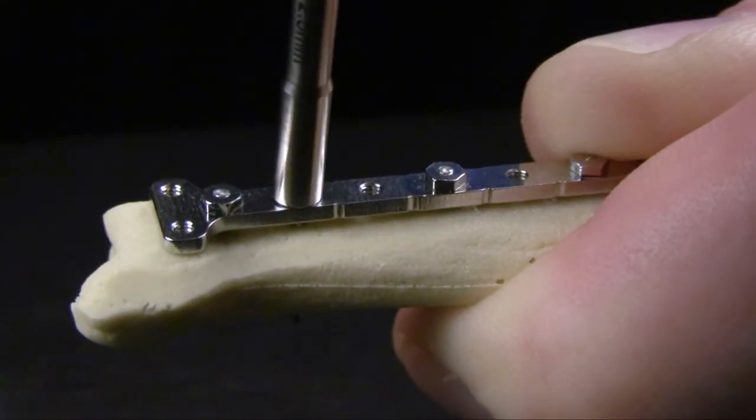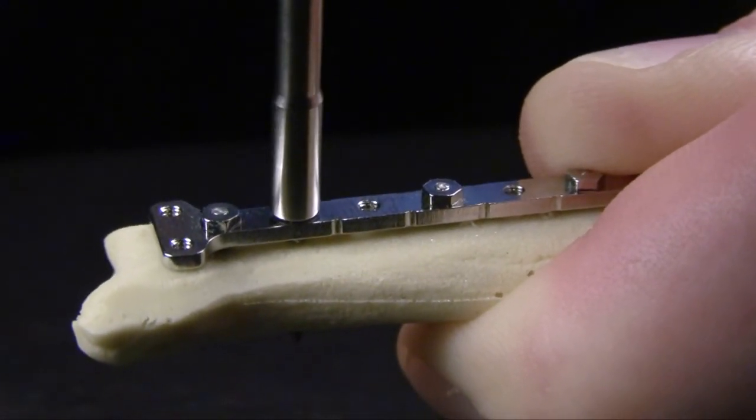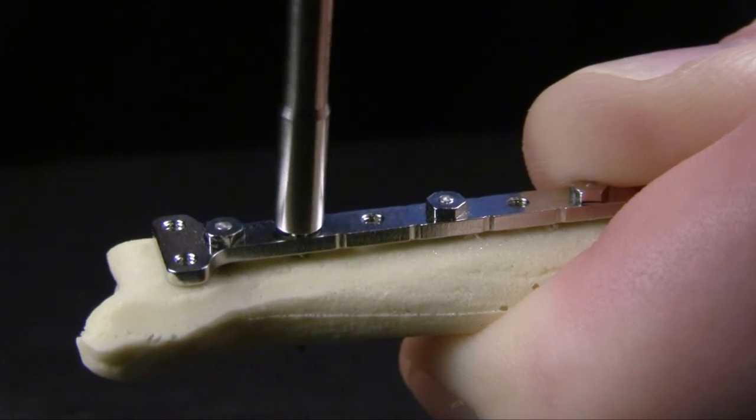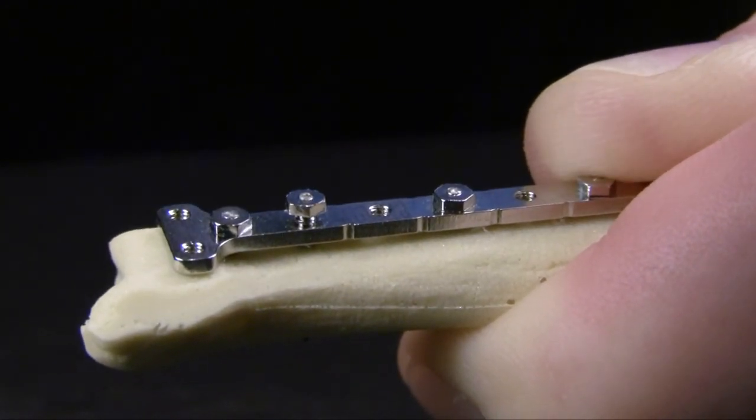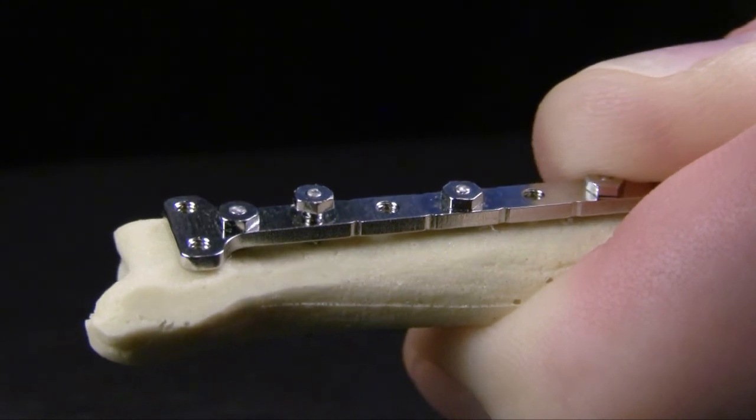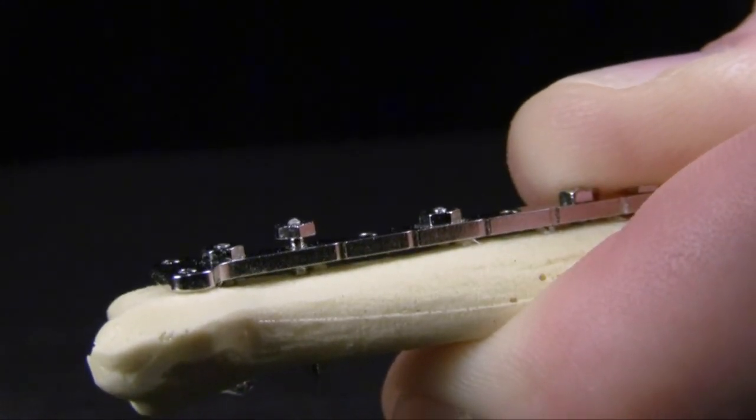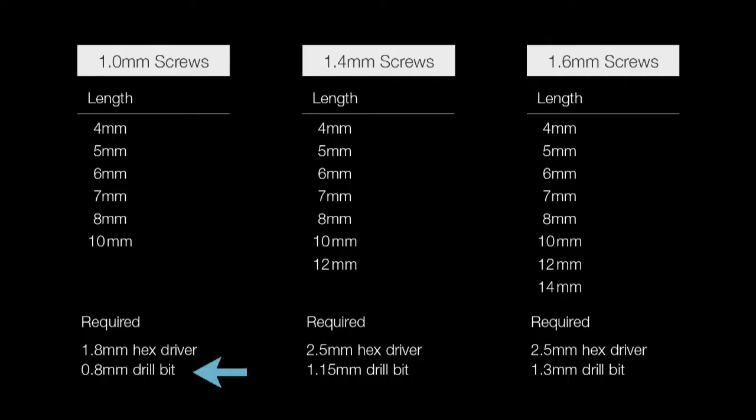Contrasted to very small internal hex or Torx drivers, the external hex head allows the surgeon much more control and mechanical advantage when removing or tightening screws. VetKISS screws are self-tapping but require pre-drilling of the appropriate diameter pilot hole. The 1.0 screw is pre-drilled using a 0.8 millimeter drill bit, the 1.4 screw using a 1.15 millimeter drill bit, and the 1.6 millimeter screw using a 1.3 millimeter drill bit.